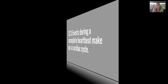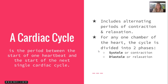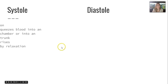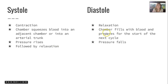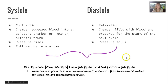Section 12-3 covers events during a complete heartbeat — the cardiac cycle — which is the period between the start of one heartbeat and the start of the next, including alternating periods of contraction and relaxation. For any one chamber, the cycle divides into two phases: systole (contraction), where the chamber squeezes blood into an adjacent chamber and pressure rises, and diastole (relaxation), where the chamber fills with blood, pressure falls, and it prepares for the next cycle. Fluid moves from high pressure to low pressure areas.